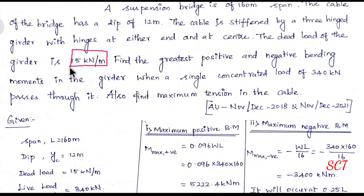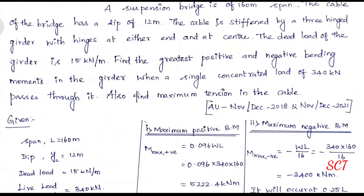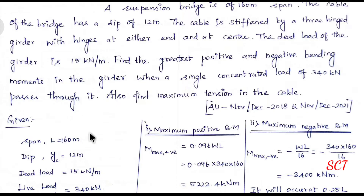The dead load on the girder is 15 kN per meter, which is the self-weight. Dead load does not cause bending moment in the girder — we will explain the formula. Find the greatest positive and negative bending moment, and also find the maximum tension in the cable, T-max.